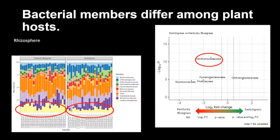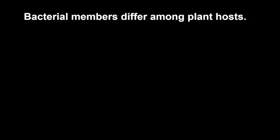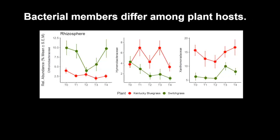We wanted to narrow it down a bit more to show differences across time and provide a few other examples. Acidobacteriaceae was higher across time in switchgrass. Hymenobacter was higher in Kentucky bluegrass throughout, even though its abundance fluctuated, it was still higher than in switchgrass. And Xanthomonadaceae — the family I was using as an example — was higher in Kentucky bluegrass than switchgrass throughout all time points.